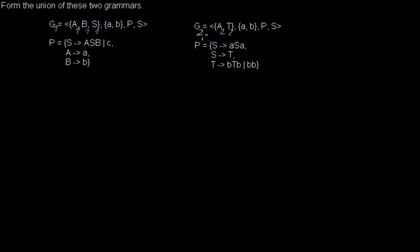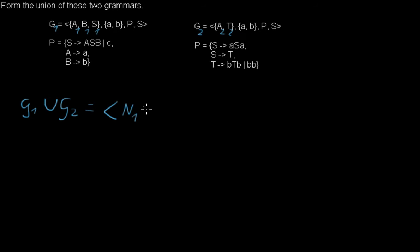I don't want to use a rule with A when I have to use this one instead, so I don't want to mix them up. When I form the new grammar G1 union G2, I will get new tuples where I will have the non-terminal symbols of G1 merged with the non-terminal symbols of N2. Of course, I will merge the terminal symbols as well, but I don't need to put indices on them because this terminal A is the same as this. So I will form the union of the two terminal sets.